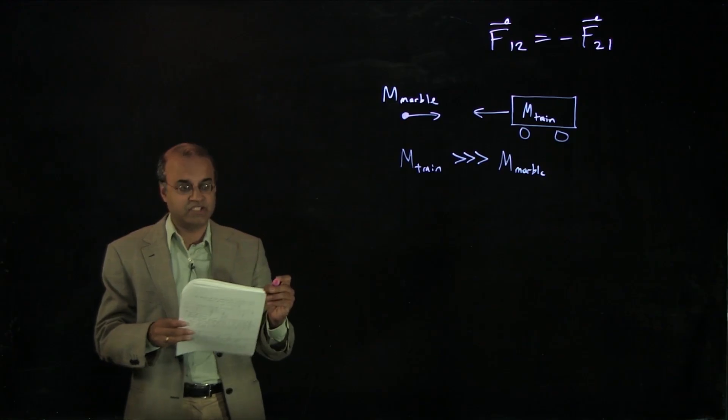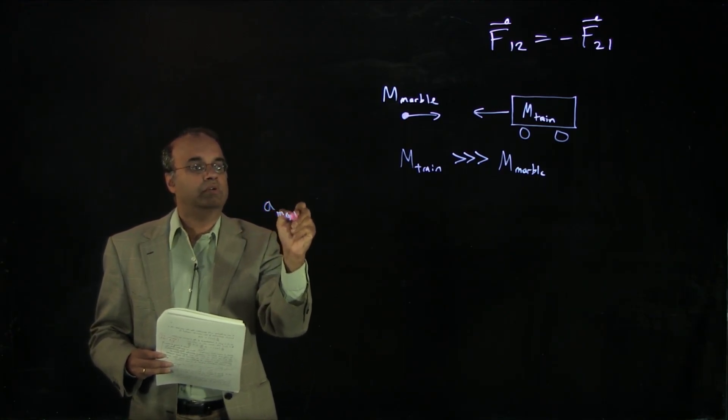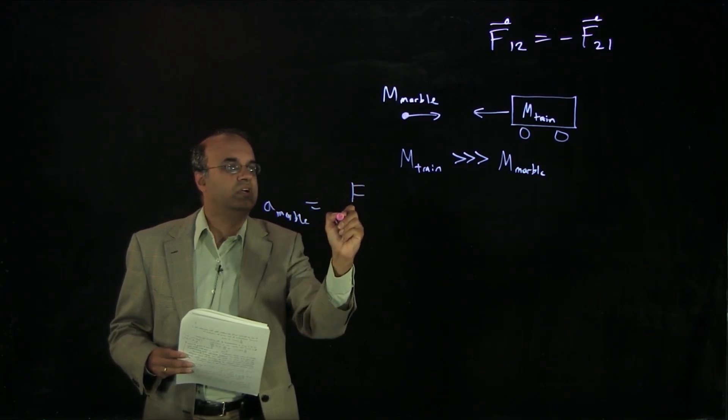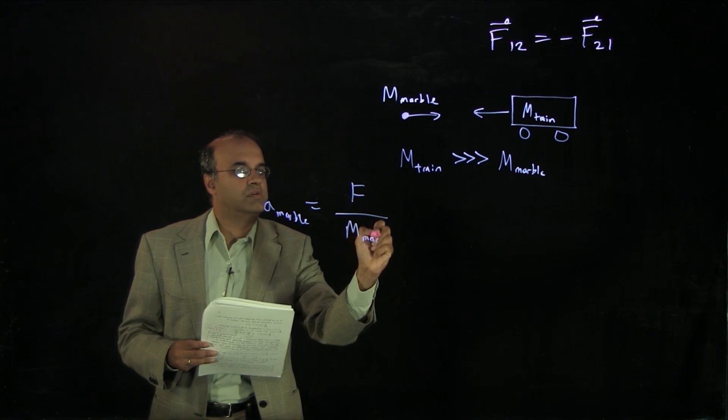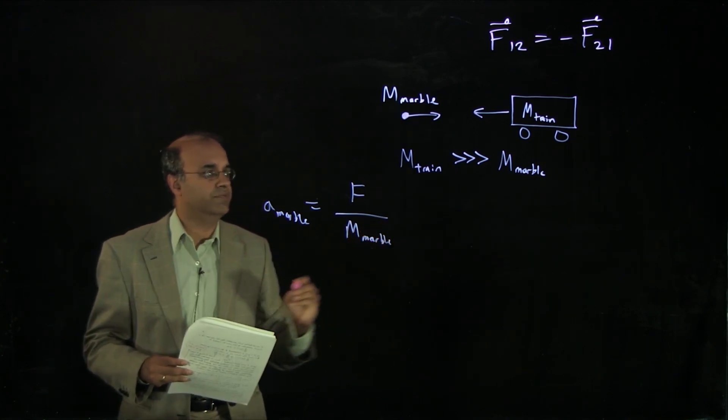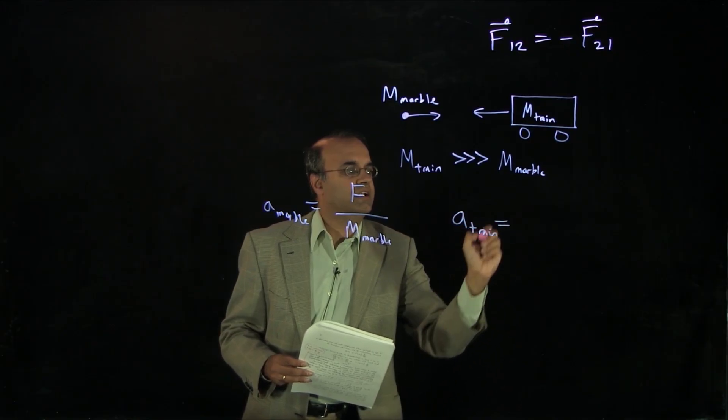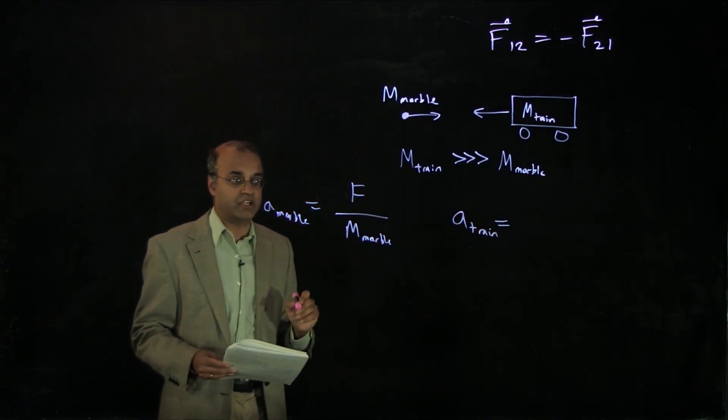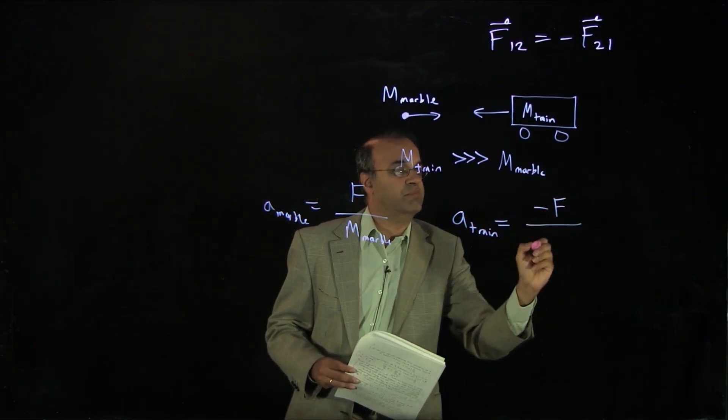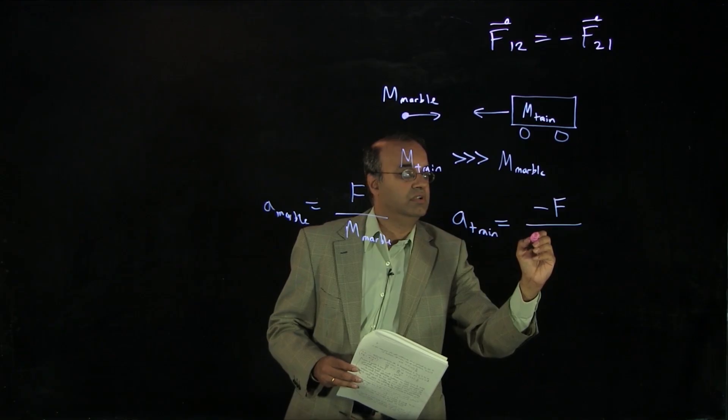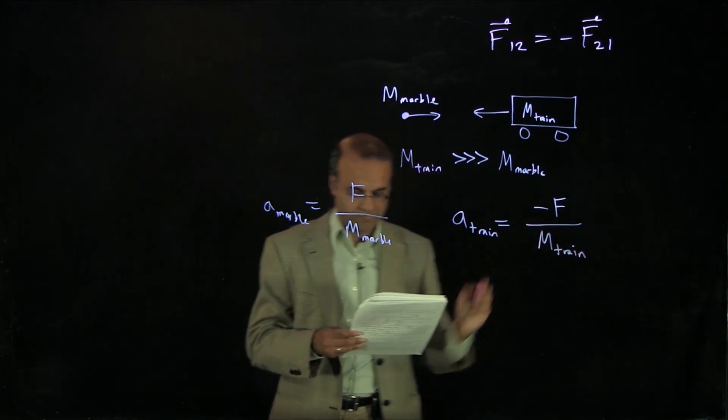If I write that in terms of the acceleration, the acceleration of the marble, a marble, is equal to the force divided by the mass of the marble, whereas the acceleration of the train is equal to minus F divided by the mass of the train.